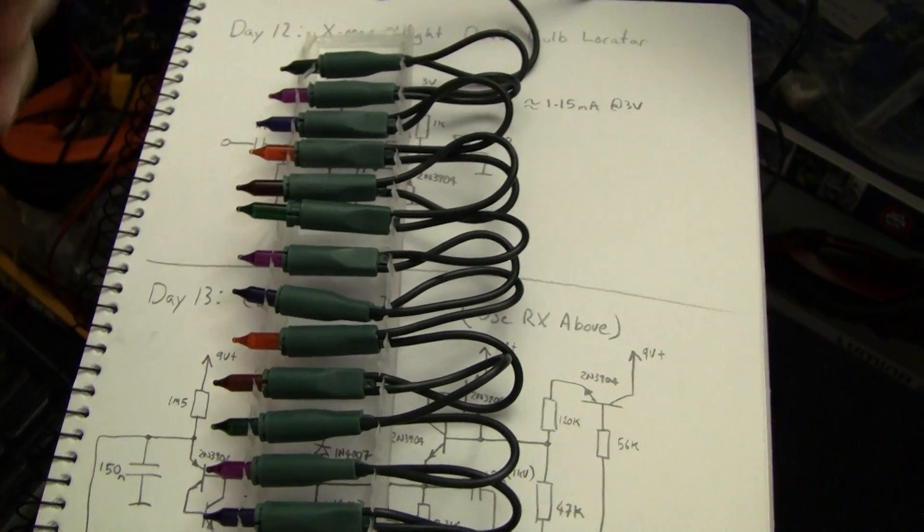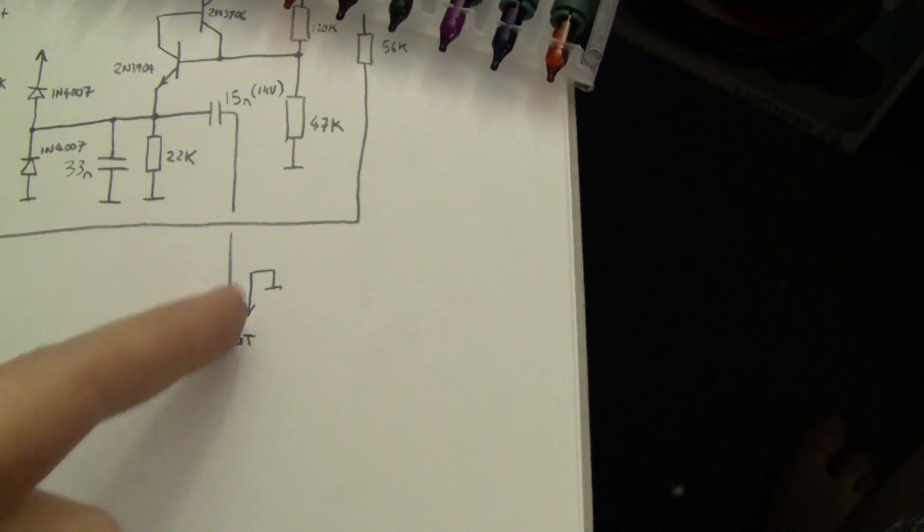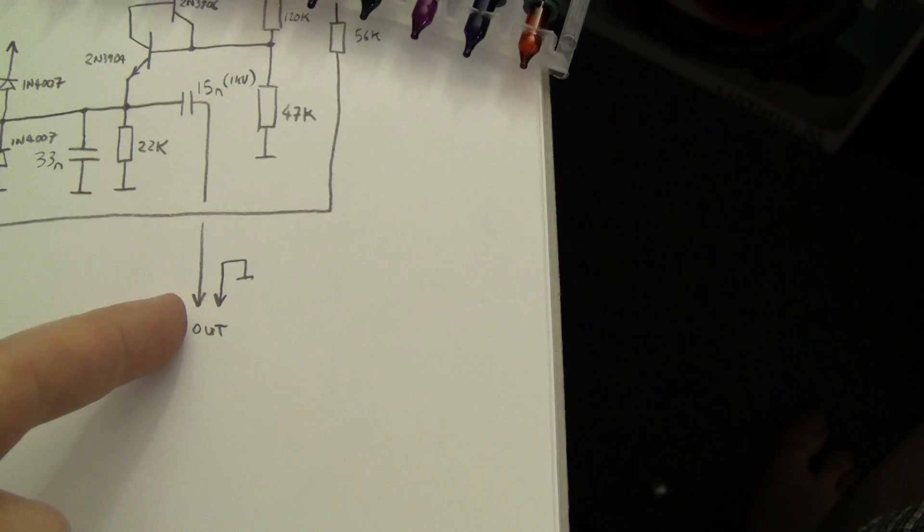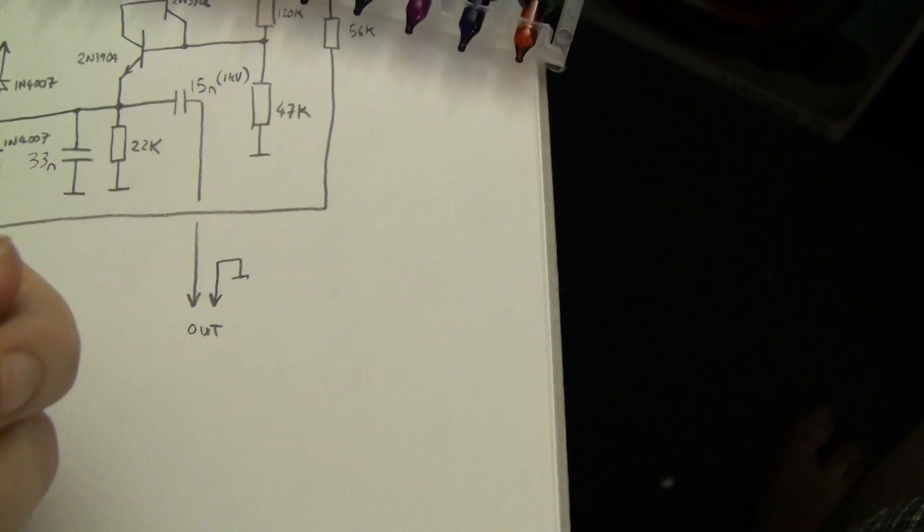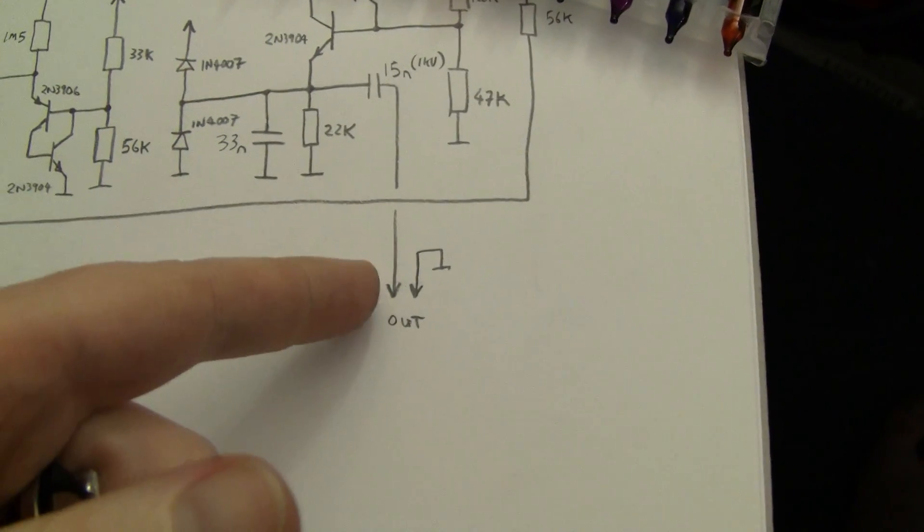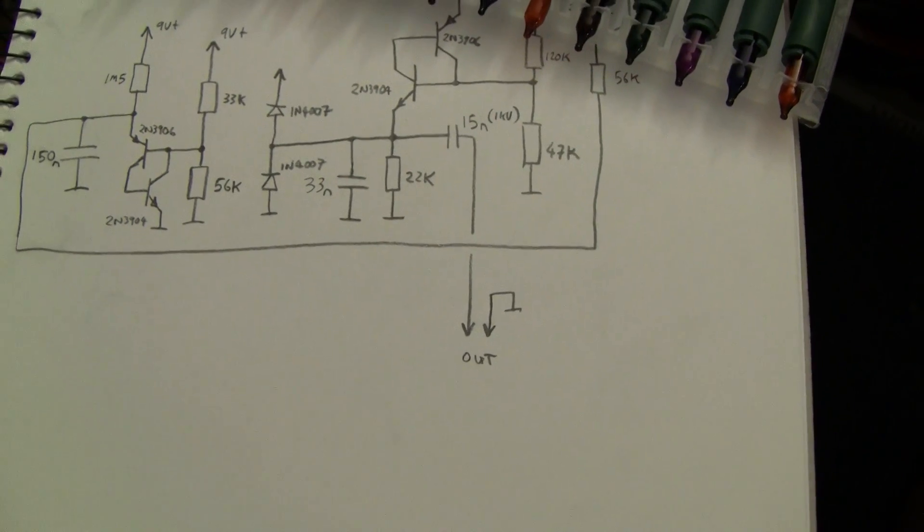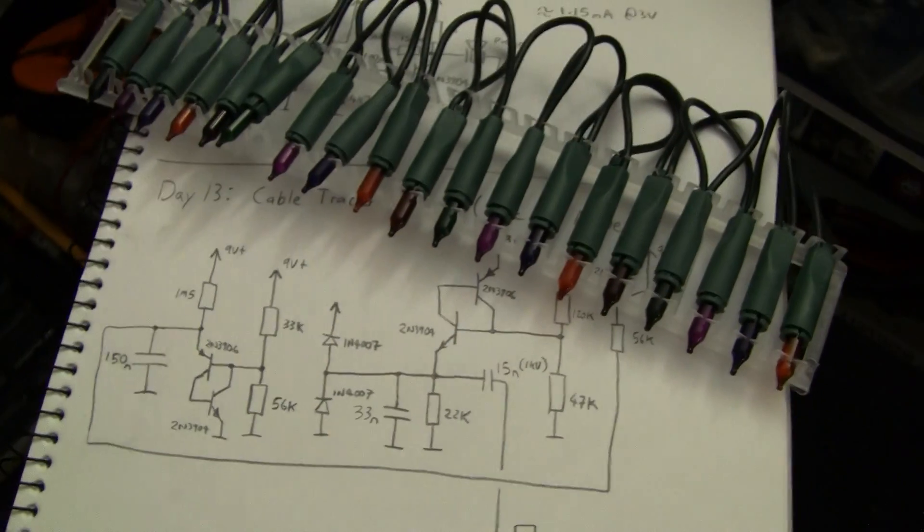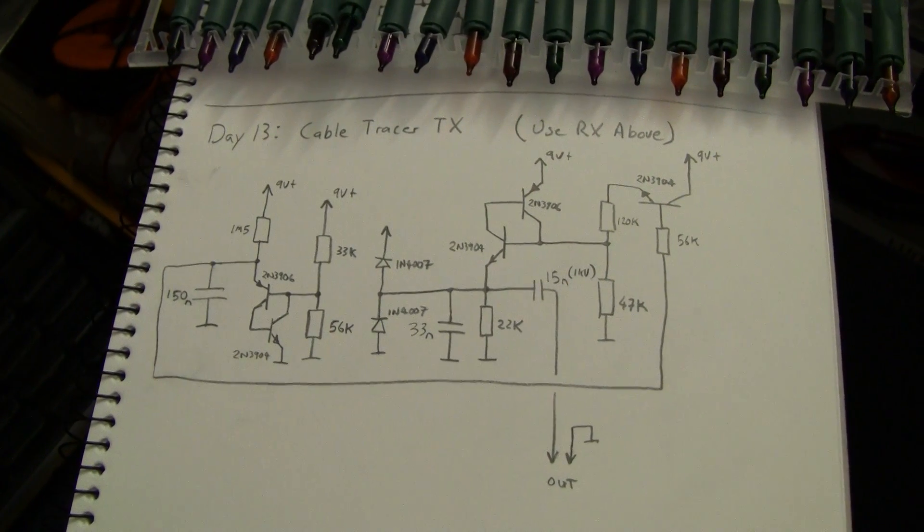You might want to build it in such a way that you use a stereo headphone connector. And you use the sleeve with a mono plug. So, when you push the mono plug into the connector, it turns on the battery. That might be one useful way of conserving battery life. Alternatively, you can just have a switch or just replace the battery every now and then.